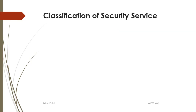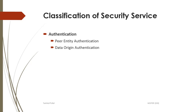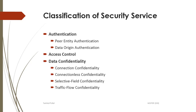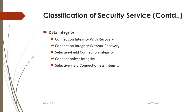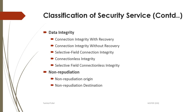Next is the classification of security service. Security service is classified as authentication — these are the subtypes of authentication. Next is access control. Next is data confidentiality, and these are the subtypes of data confidentiality. Next is data integrity, with its subtypes. Next is non-repudiation and its subtypes. We will see them one by one.